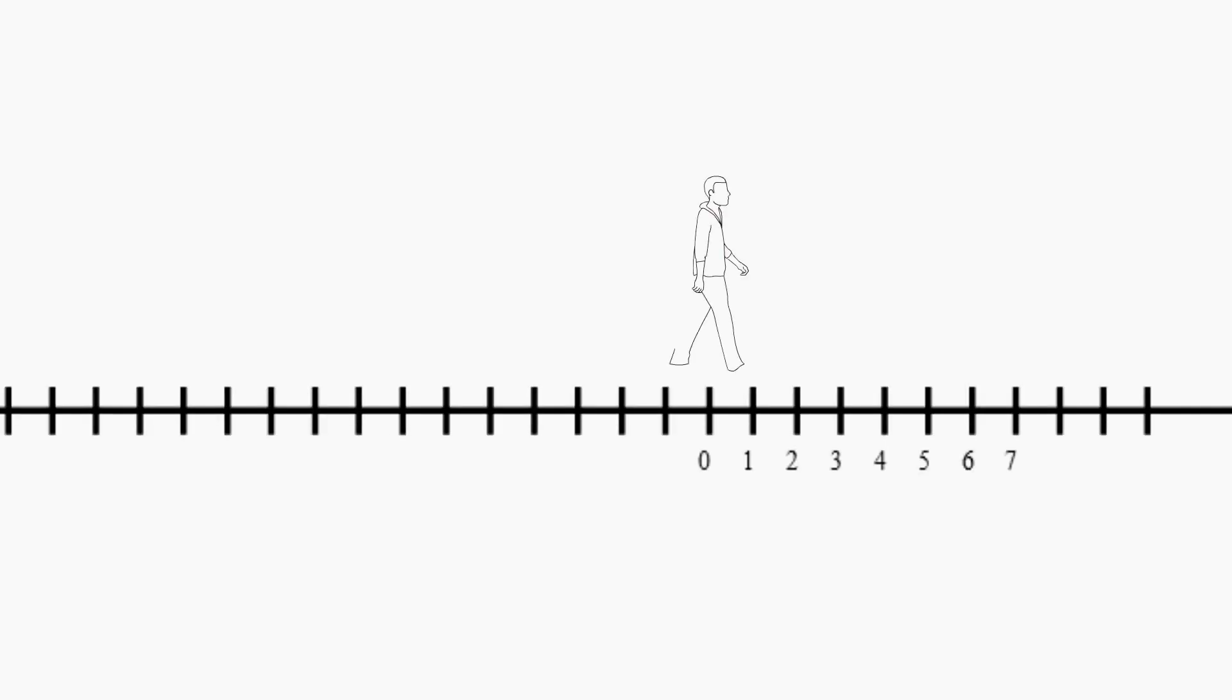Suppose you start walking on the number line and count the numbers you pass. There's 5, 6, 7. You can keep counting forever.